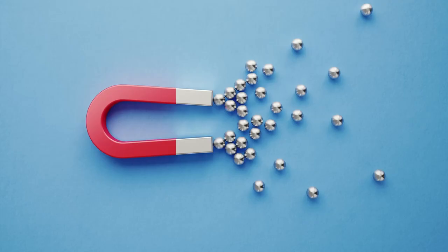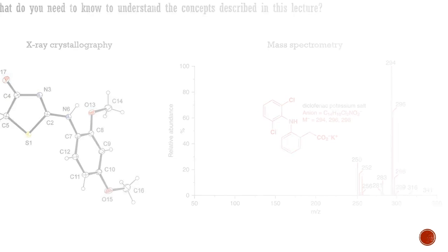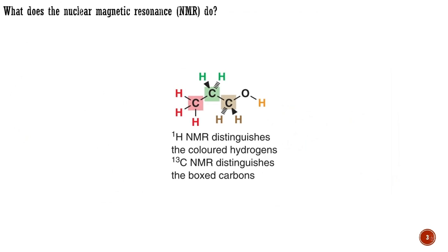Hello everyone, and welcome back to the series of lectures focused on the main spectroscopic techniques used in the determination of the structure of organic molecules. So far, I have mainly concentrated on the description of X-ray crystallography and mass spectrometry, which are powerful tools for determining the shape and weight of organic compounds. In this lecture, my aim will be to give you a general introduction to the most important physico-chemical technique used to describe the structure of organic molecules — I am speaking about nuclear magnetic resonance spectroscopy, commonly abbreviated as NMR.